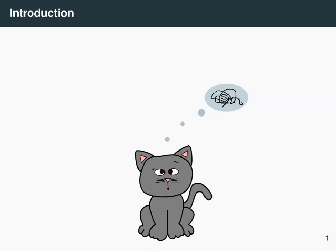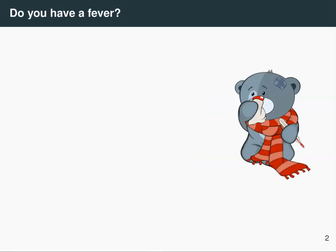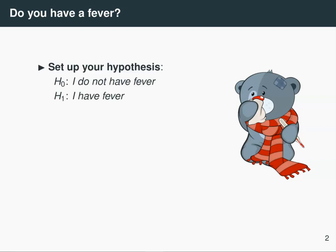For example, let's say that you're not feeling very well and you think you might be coming down with something. You think you might have fever. So to examine this, you set up the null hypothesis, which is that you're healthy, there is nothing unexpected, and you do not have fever. The alternative hypothesis is that you do have fever.